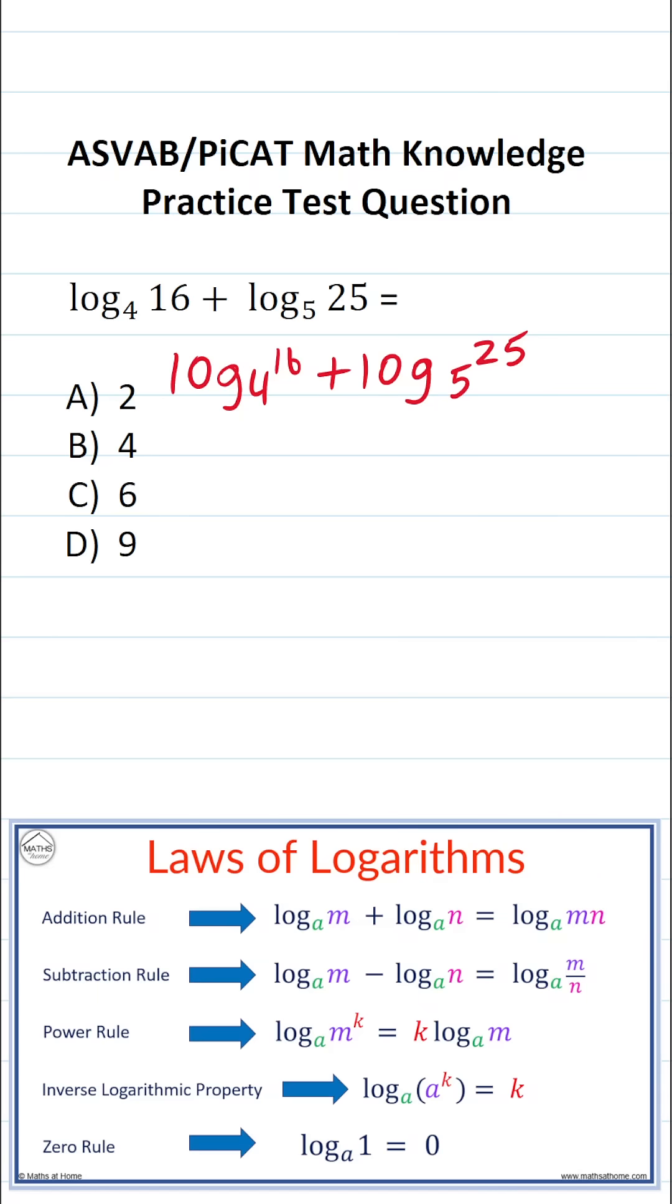Now, in order to solve this one, you have to know the inverse logarithmic property, which is one of the laws of logarithms. It's actually fairly easy to understand. It says if you have log base a of a to the k power, it's simply equal to k.